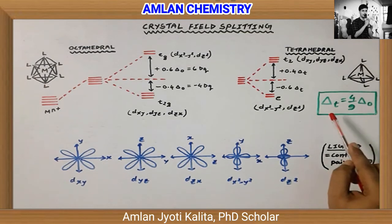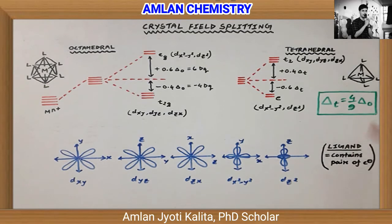The relationship between crystal field splitting in tetrahedral and octahedral is: ΔT equals 4/9 times ΔO. So this is the relation between them.